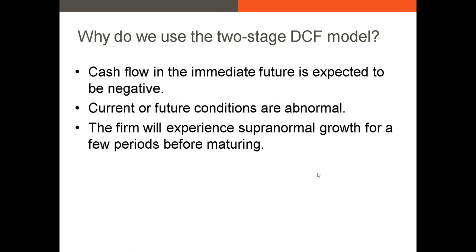There are a couple of problems when using the one-stage DCF model. The first is that cash flow could be negative. For example, if there's been a worldwide pandemic and nobody wants to ride on a cruise liner, Royal Caribbean or Norwegian Cruise Lines might be running negative free cash flow over the next year or two. That's pretty abnormal — we'd normally expect that if they can weather the storm, they would return to positive free cash flow.